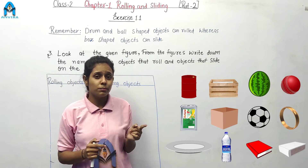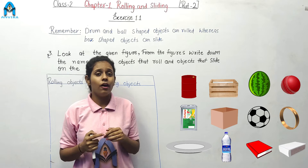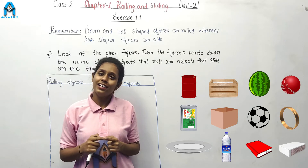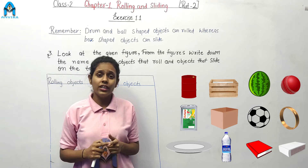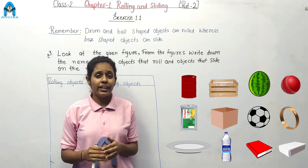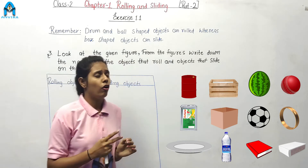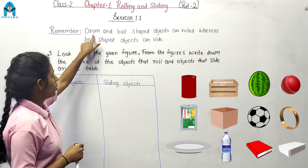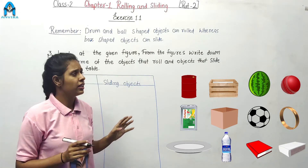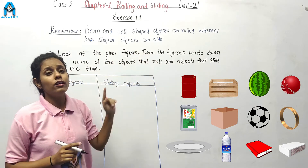What did we learn in our first part of this chapter? We learnt about some objects. Some objects can roll and some can slide. Objects with a flat surface can slide, and objects with a curved surface can roll. We also learnt to identify the shape of objects. Remember: drum and ball shaped objects can roll, and box shaped objects can slide.